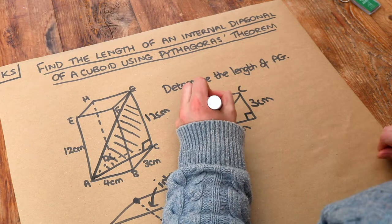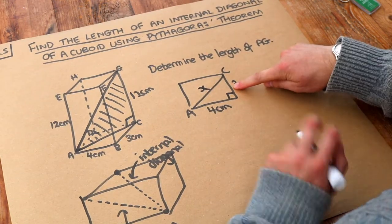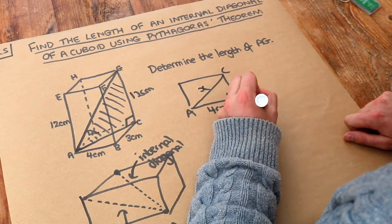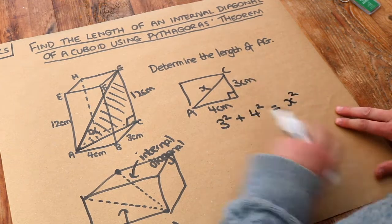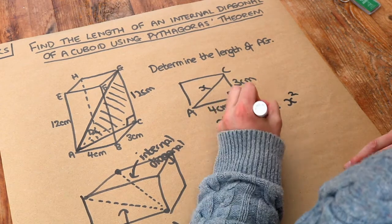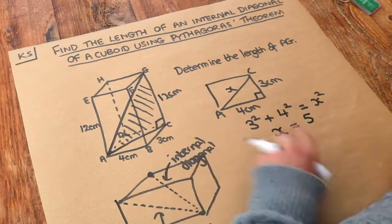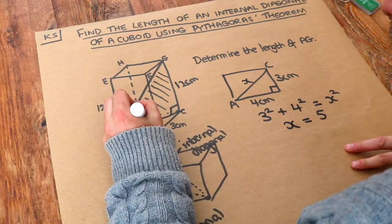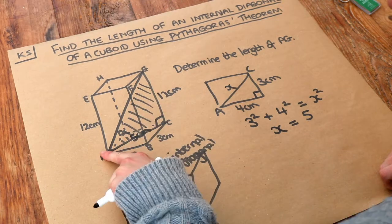So if we just make that X we can use Pythagoras theorem. We do the shorter length squared, plus the other shorter length squared is equal to the hypotenuse squared. And then if we solve that equation you get X is equal to 5. So we now know that the bottom length of this big right angle triangle is 5 centimetres. And we've got enough information now to find out what AG is.